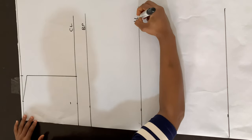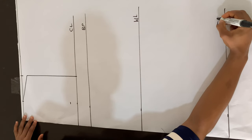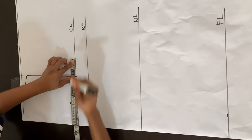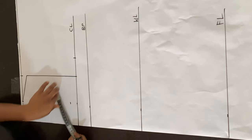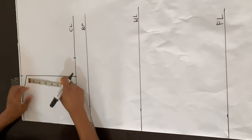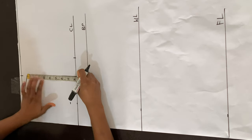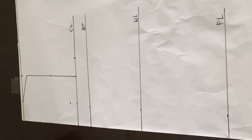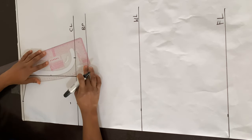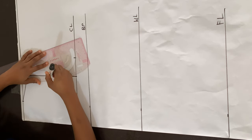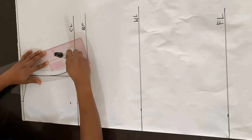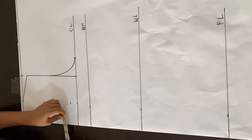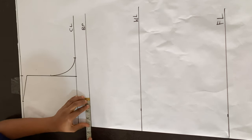I'm labeling all the lines: chest line, bust point, waistline, and full length. Now I'm dividing the bust circumference by four and marking that on the chest line. Then I measure from the shoulder slope to the chest line, get the midpoint, and connect that with a curve to the point I marked on the chest line to create the armhole line for the back.